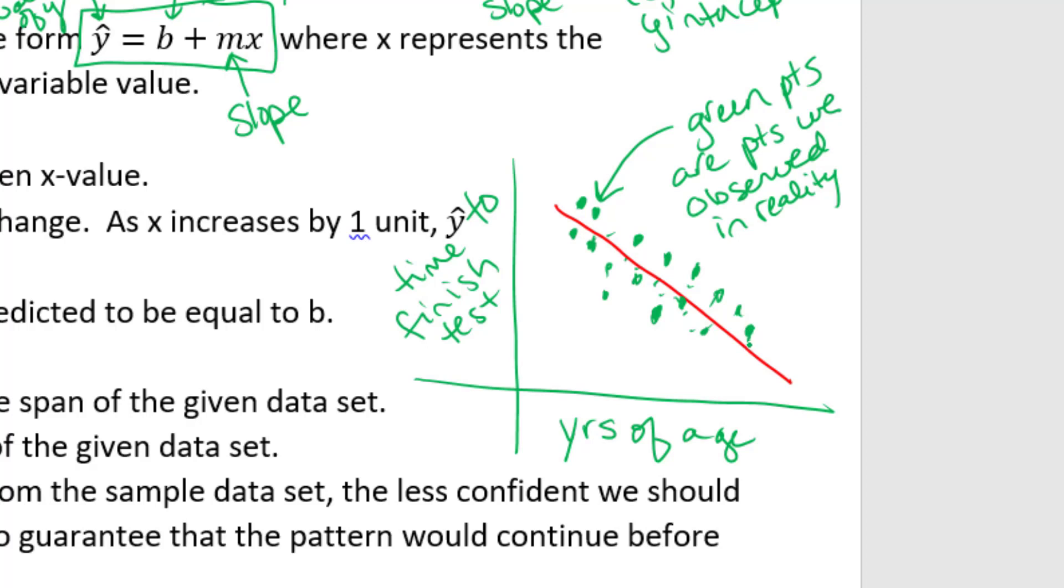So notice the highest x value that was actually observed in reality is about here and the lowest x value that was actually observed in reality is here. And it looks like the lowest y value observed in reality is here and the highest y value is here. So that kind of creates this little box, highest and lowest,